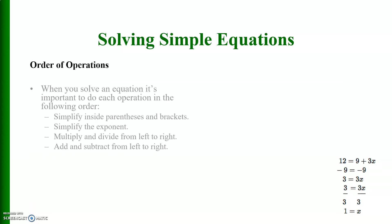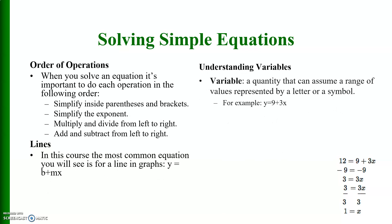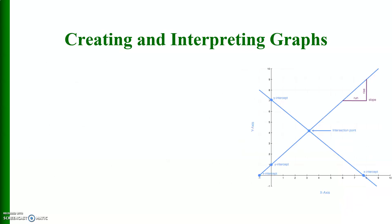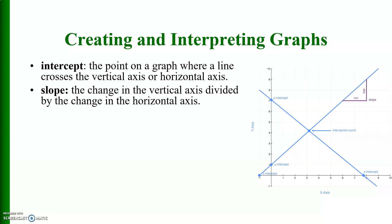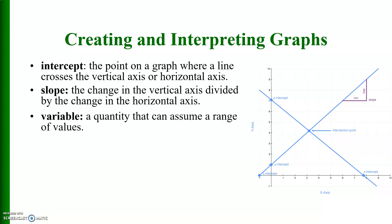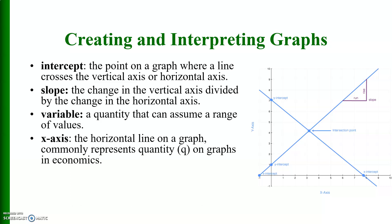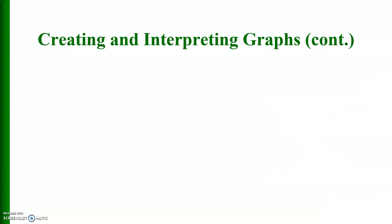Solving simple equations: you can work through these and see how to solve them. Creating and interpreting graphs: key concepts include the intercept — the point where a line crosses the vertical or horizontal axis — and the slope, which is the change in the vertical axis divided by the change in the horizontal axis. A variable is a quantity that can assume a range of values. The x-axis (horizontal) commonly represents quantity demanded, and the y-axis (vertical) commonly represents price in economics graphs.